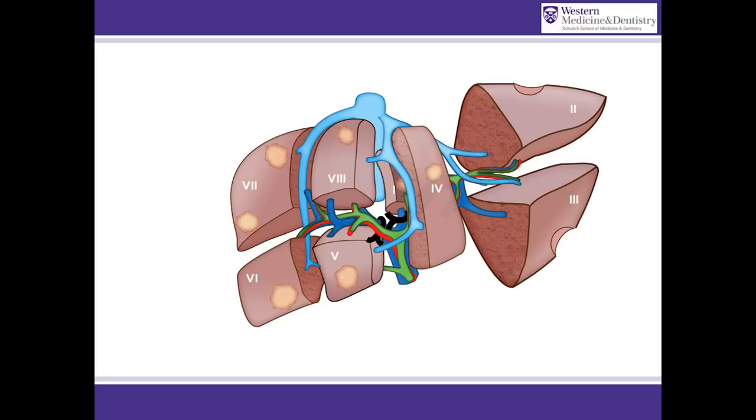The patient is taken back to the OR and the diseased, deportalized part of the liver is removed by simple transection of the respective hepatic artery, hepatic duct, and hepatic veins.